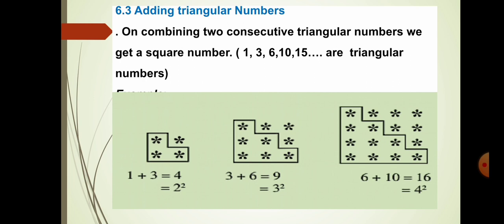You can see the pattern: 1+3=4, which is 2 squared; 3+6=9, which is 3 squared; 6+10=16, which is 4 squared; and 10+15=25, which is 5 squared. So combining two consecutive triangular numbers gives us square numbers.